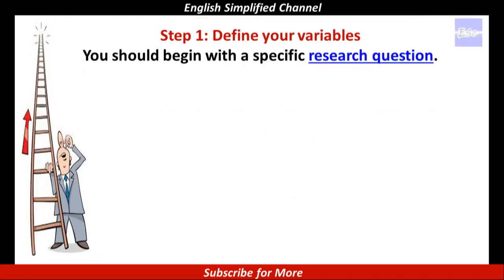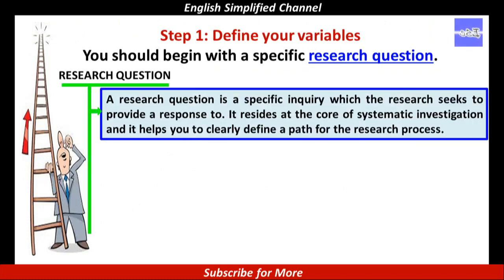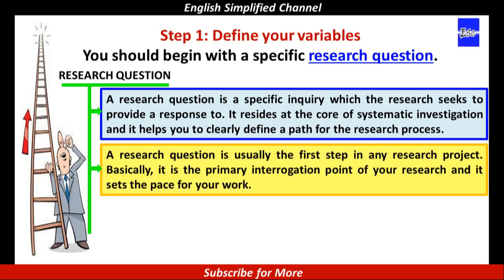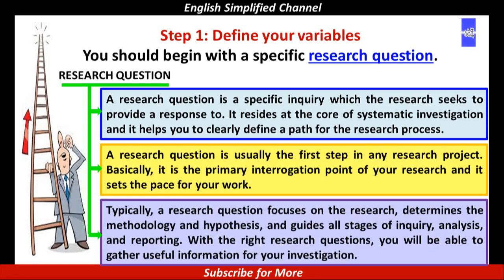Step 1: Define your variables. In defining the variables, you should begin with a specific research question. A research question is a specific inquiry which the research seeks to provide a response to. It resides at the core of systematic investigation, and it helps you to clearly define a path for the research process. A research question is usually the first step in any research project — it is the primary interrogation point of your research and sets the pace for your work. Typically, a research question focuses on the research, determines the methodology and hypothesis, and guides all stages of inquiry, analysis, and reporting.